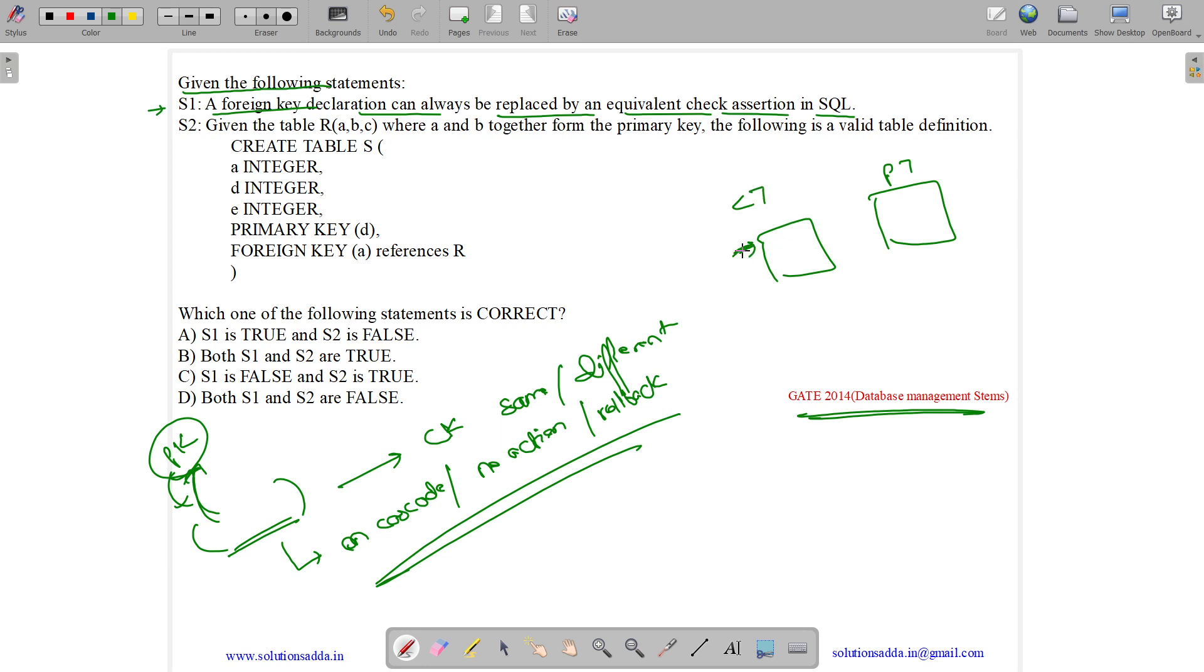Now while performing insertion in the child table, we can make some checks. Using the check condition, we can make sure that we are basically imitating the working of the foreign key. But during deletion in the parent table, we can't make sure that the referential integrity of cascade, no action and rollback are maintained.